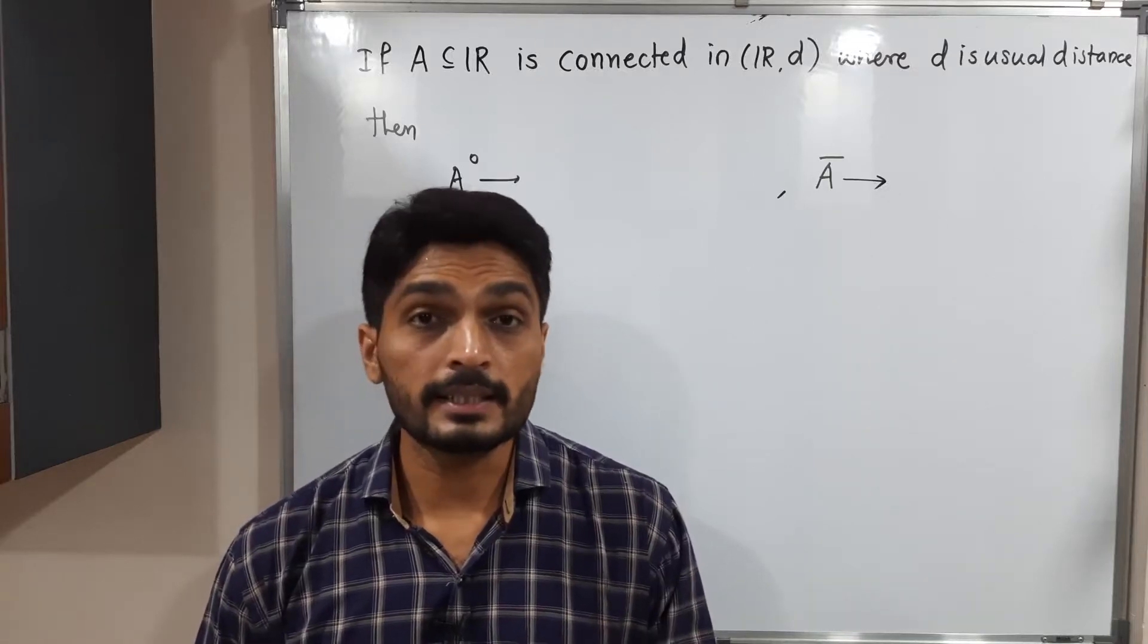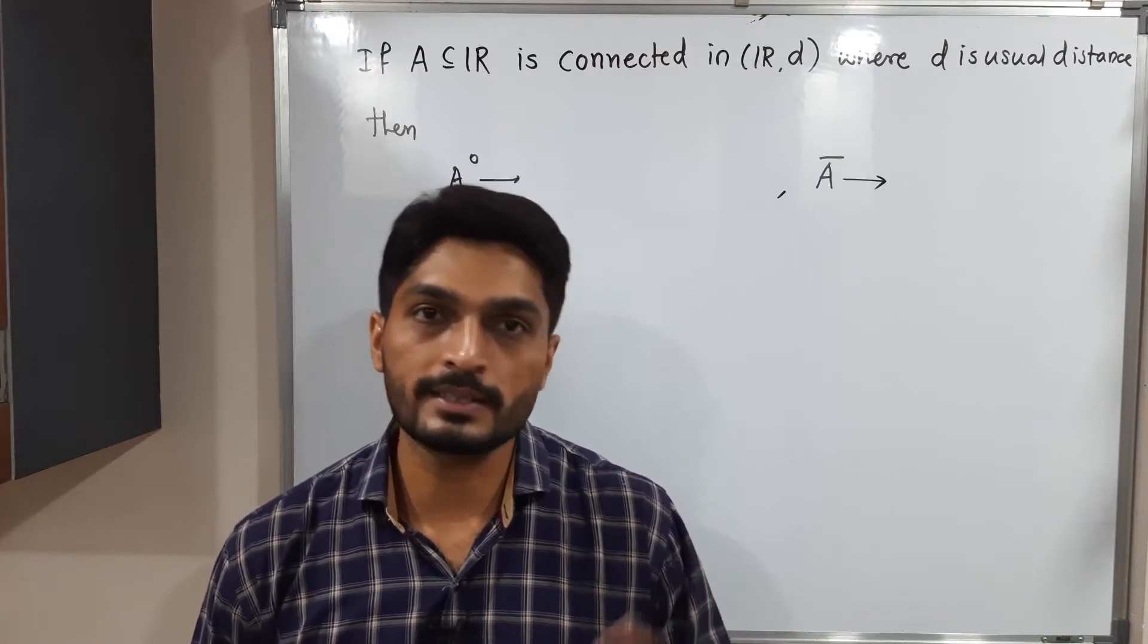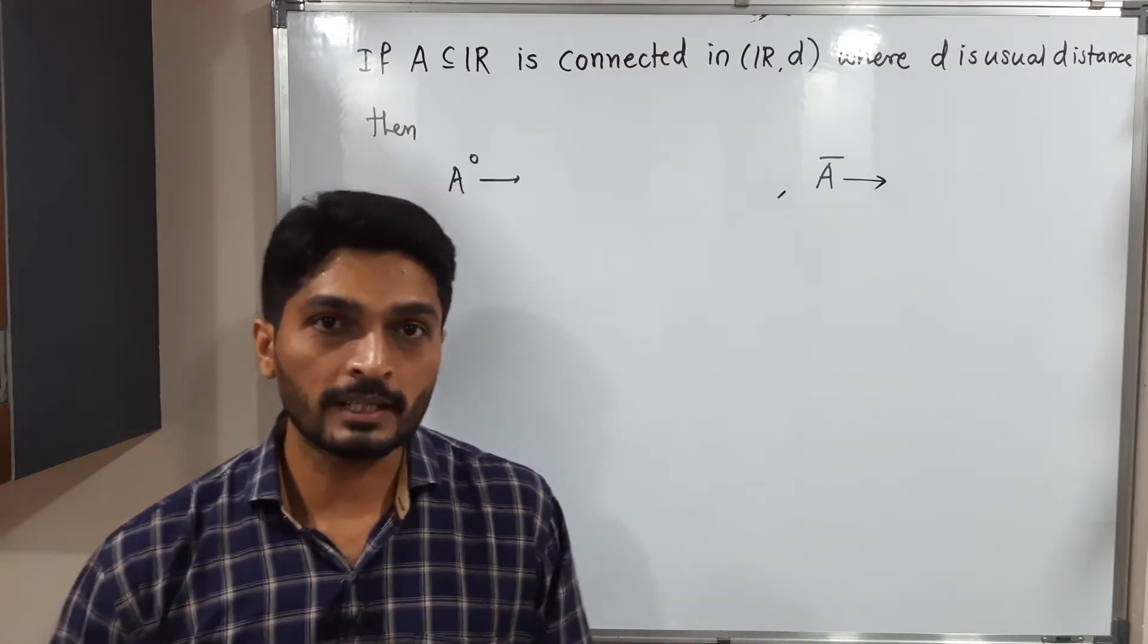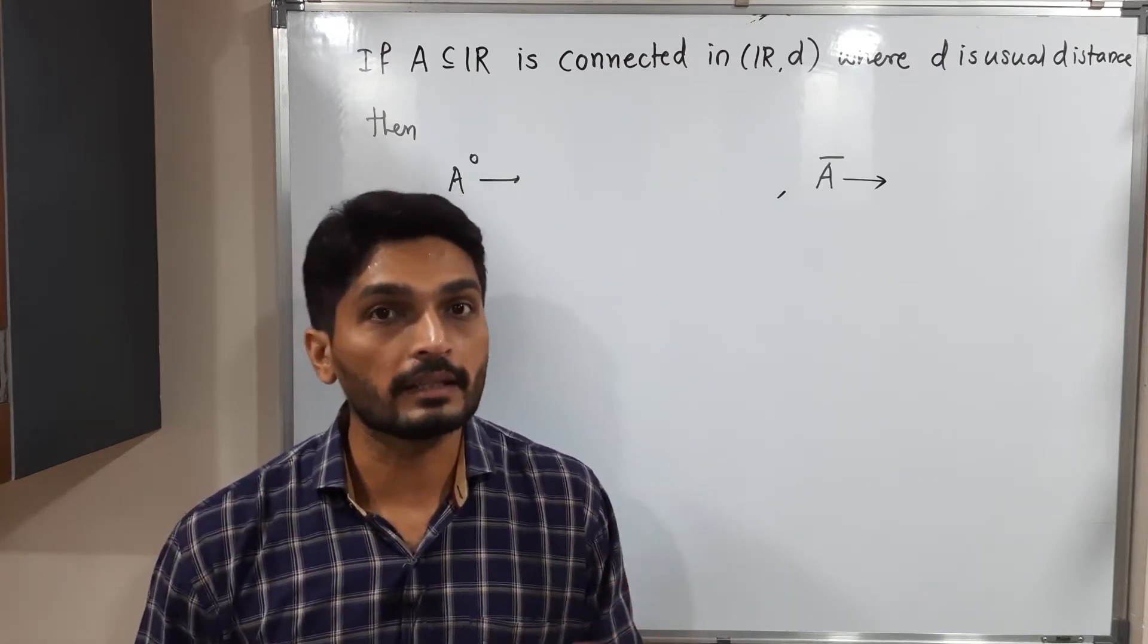Let us discuss this example. In this example we have a metric space R^d where d is the usual distance. You know its definition: d(x,y) is equal to |x - y|. We have a set A which is connected, so we have to conclude about A̅ (A bar) and A° (A interior).